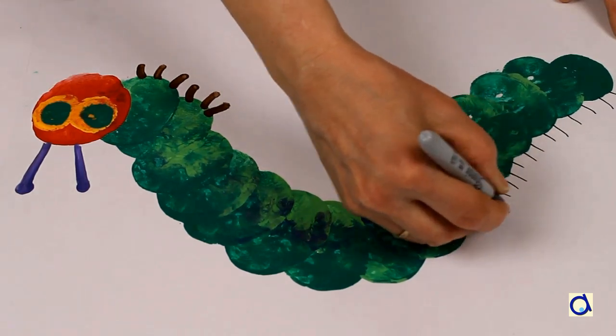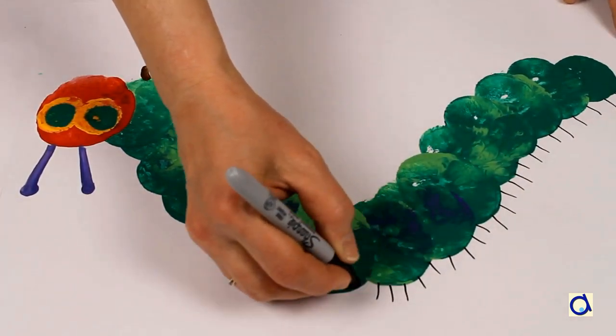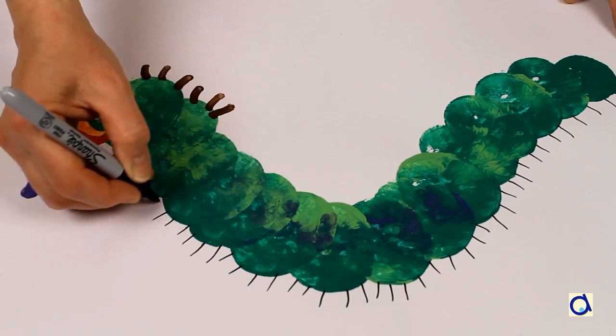Some caterpillars are hairy. To represent the hairs of the caterpillar, make lines above the caterpillar with a black marker.